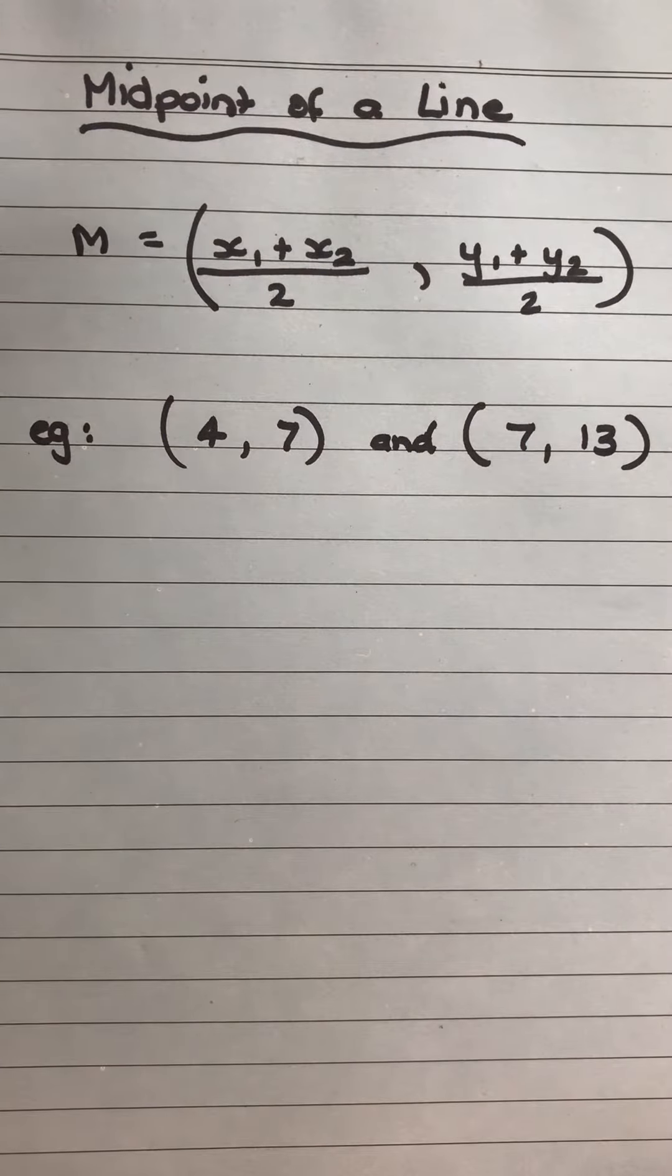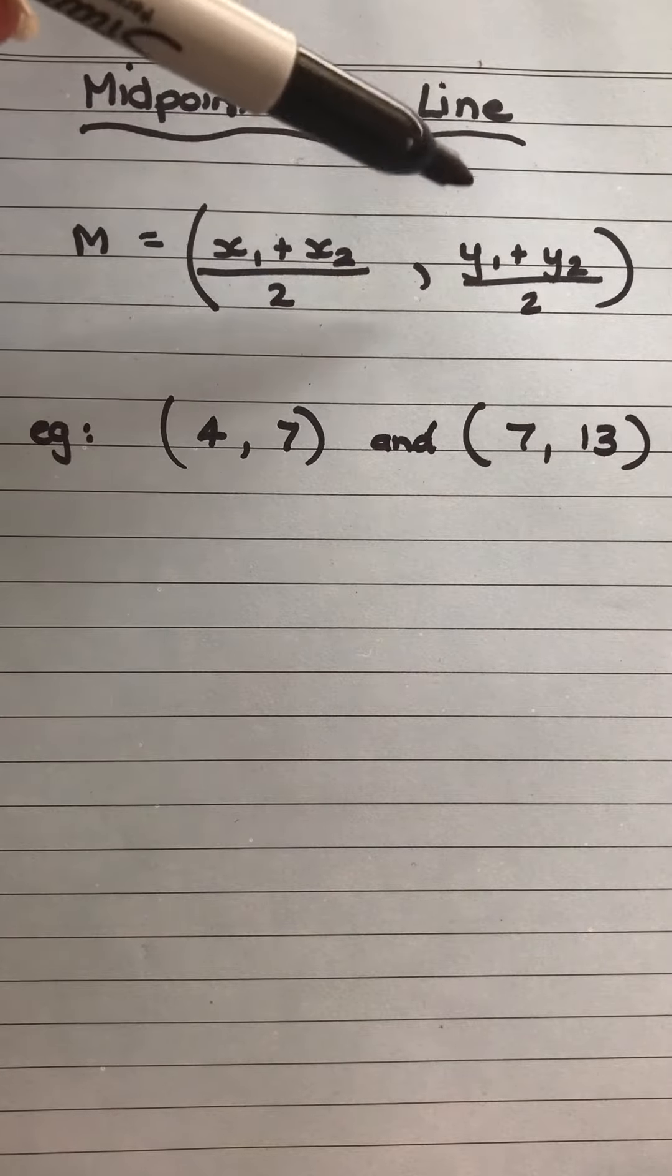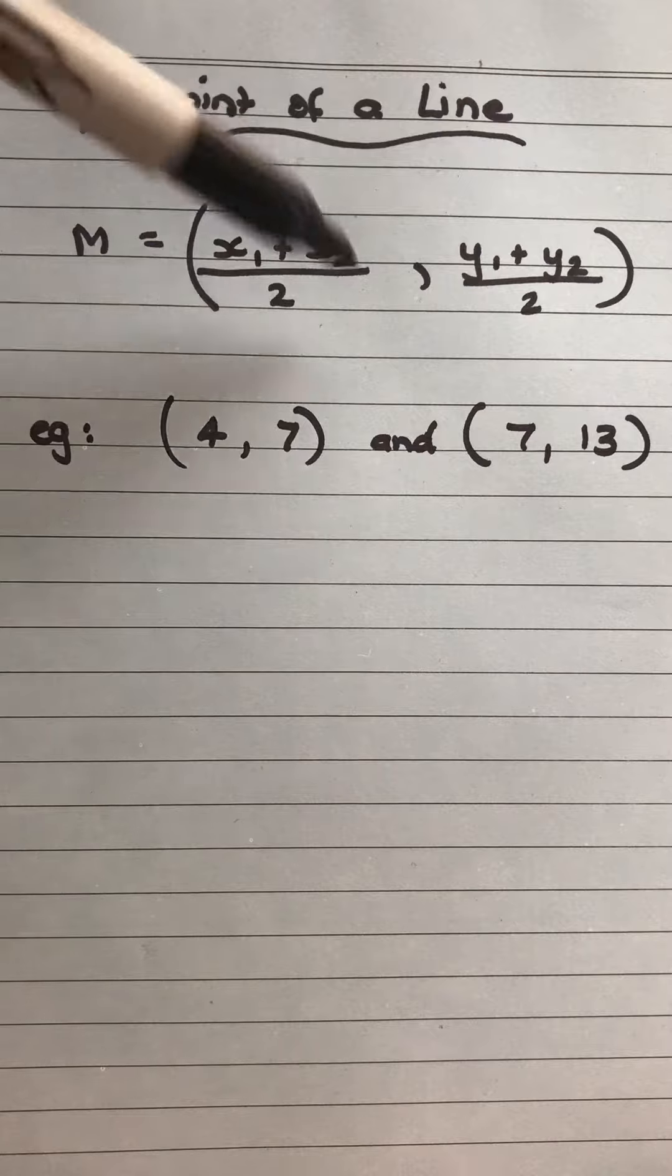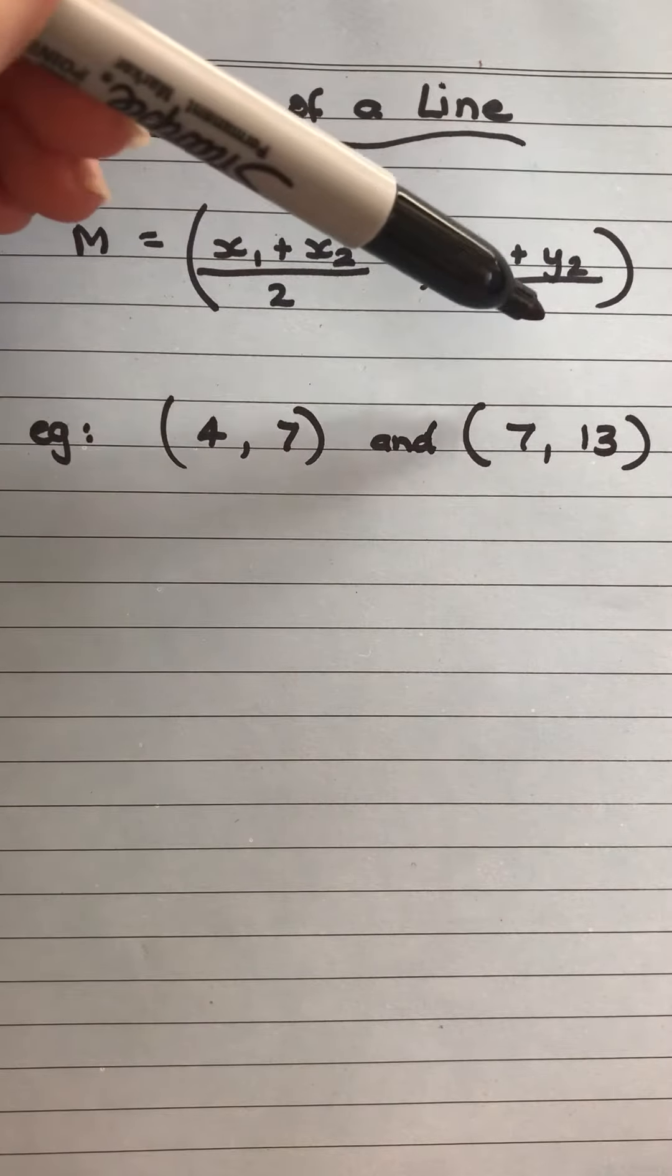Having a look at midpoint of a line, our rule for midpoint of a line is M equals x1 plus x2 over 2, and the second part of that, so that gives us our x coordinate, to get our y coordinate we do y1 plus y2 over 2.